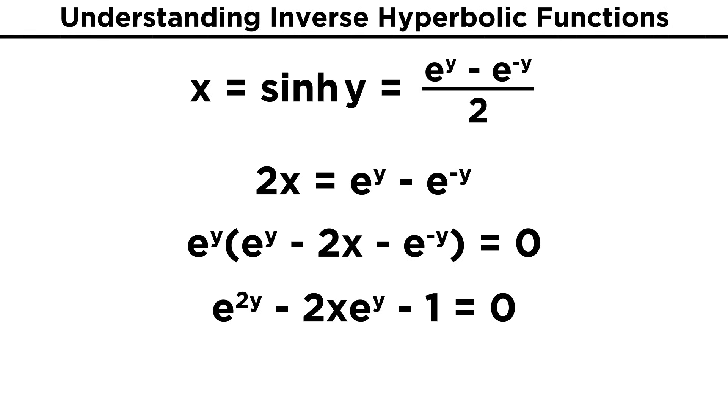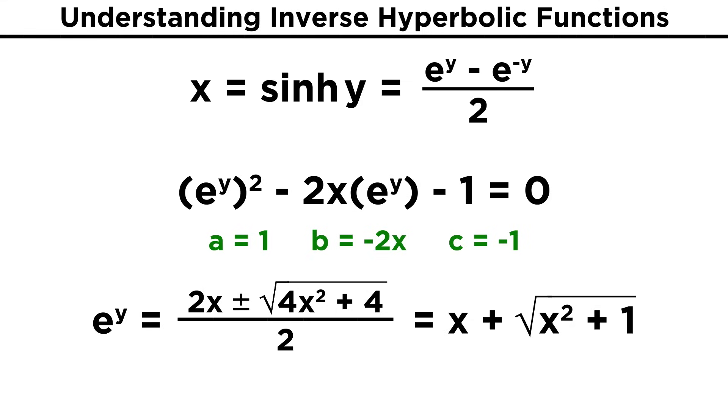Then we notice that this is actually in the form of a quadratic equation, since e to the two y is just e to the y quantity squared. If we use the quadratic formula, we end up with this expression for e to the y, and then to solve for y, we just take the natural log of both sides.